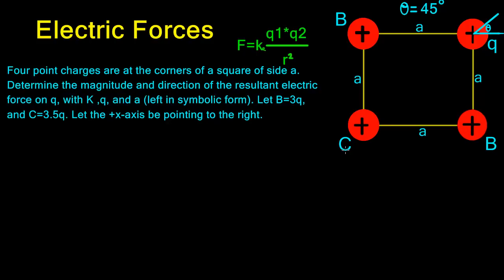Let the positive x-axis be pointing to the right. In this problem, it helps to look for the direction that these forces are going to have on each other. B is going to be pushing on Q in the positive x direction, the other B positive charge is going to be pushing up in the y direction, and C is going to be pushing on it at a 45 degree angle.